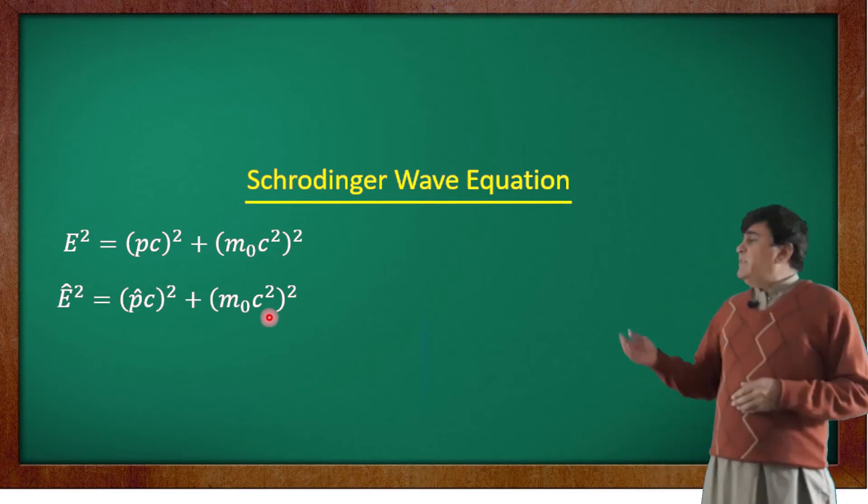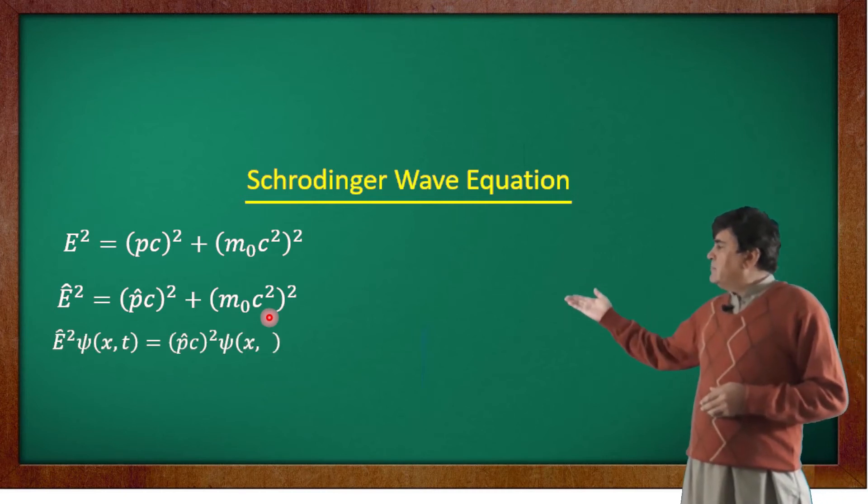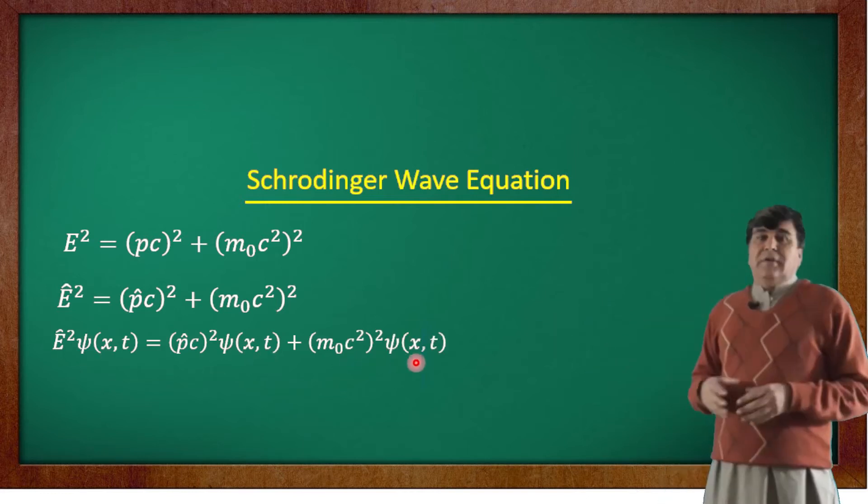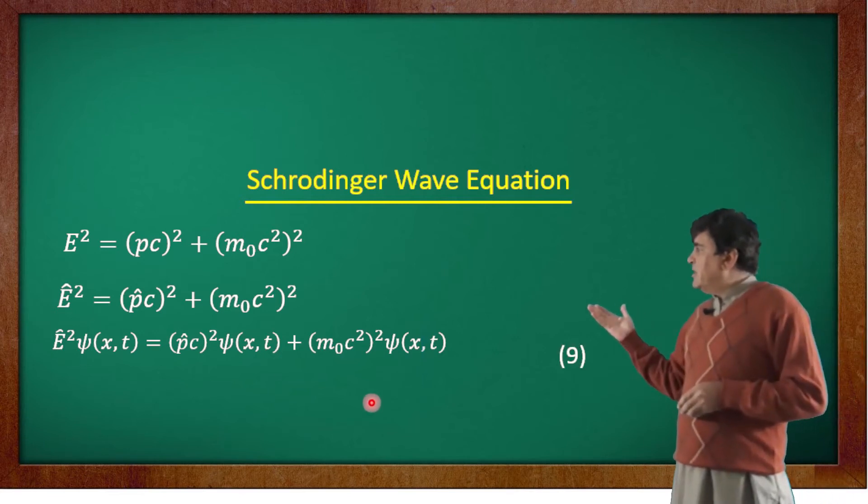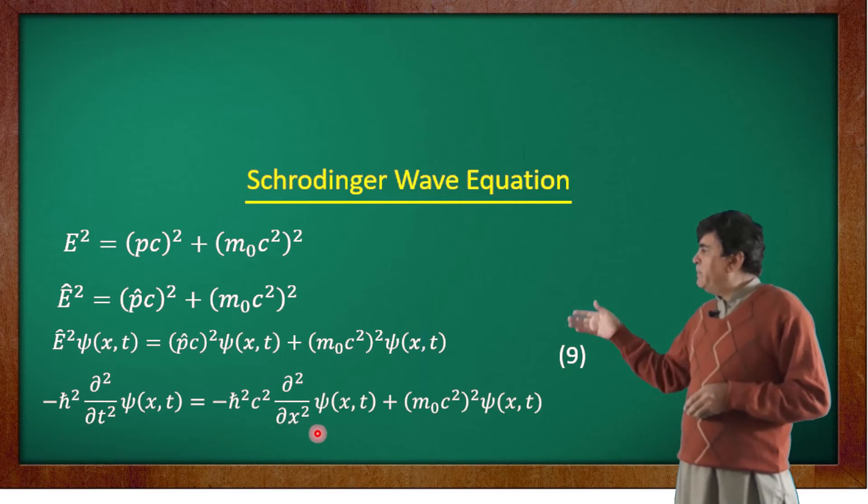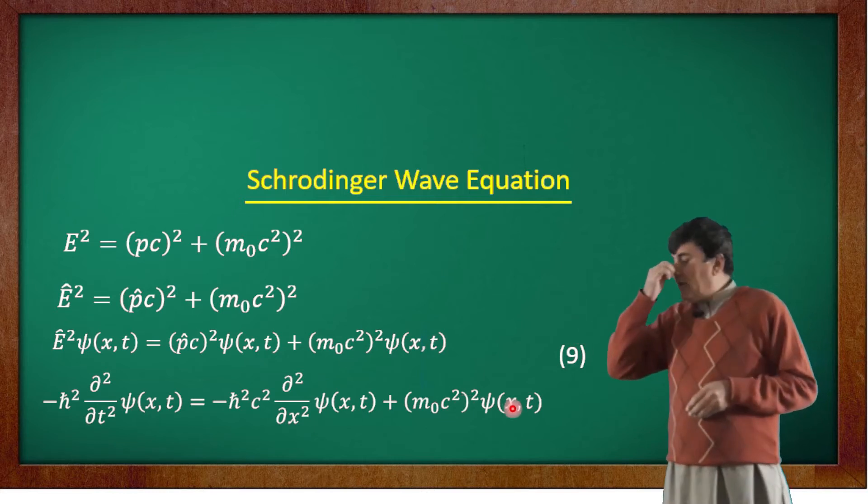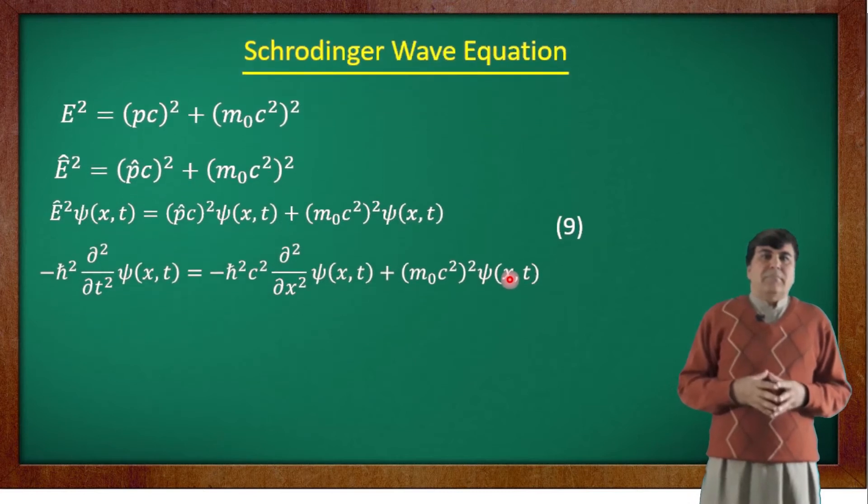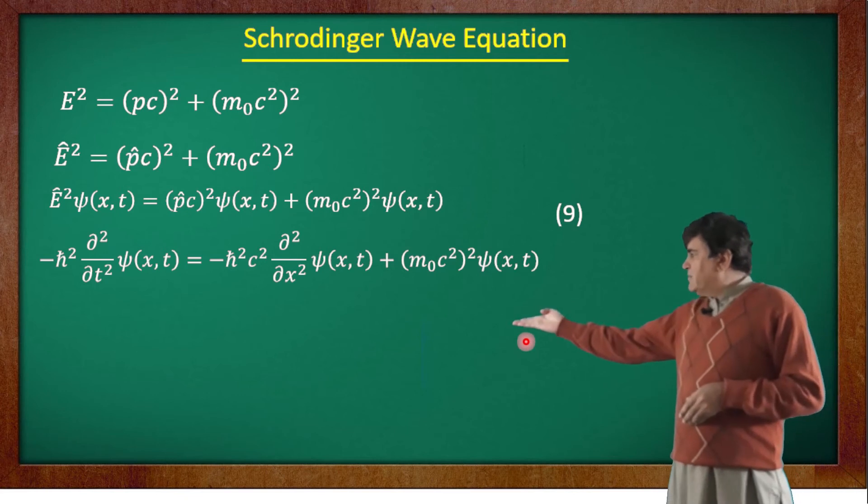Applying this to the wave equation, we can write it in this form: we multiply each term by the wave function ψ. Using equation 7, this can be put into the form -ℏ² ∂²/∂t² applied to the wave function equals -ℏ²c² ∂²/∂x² applied to the wave function plus (m₀c²)² applied to the wave function. Rearranging this equation, it can further be put into this one form. This is a correct relativistic wave equation for massive particles.